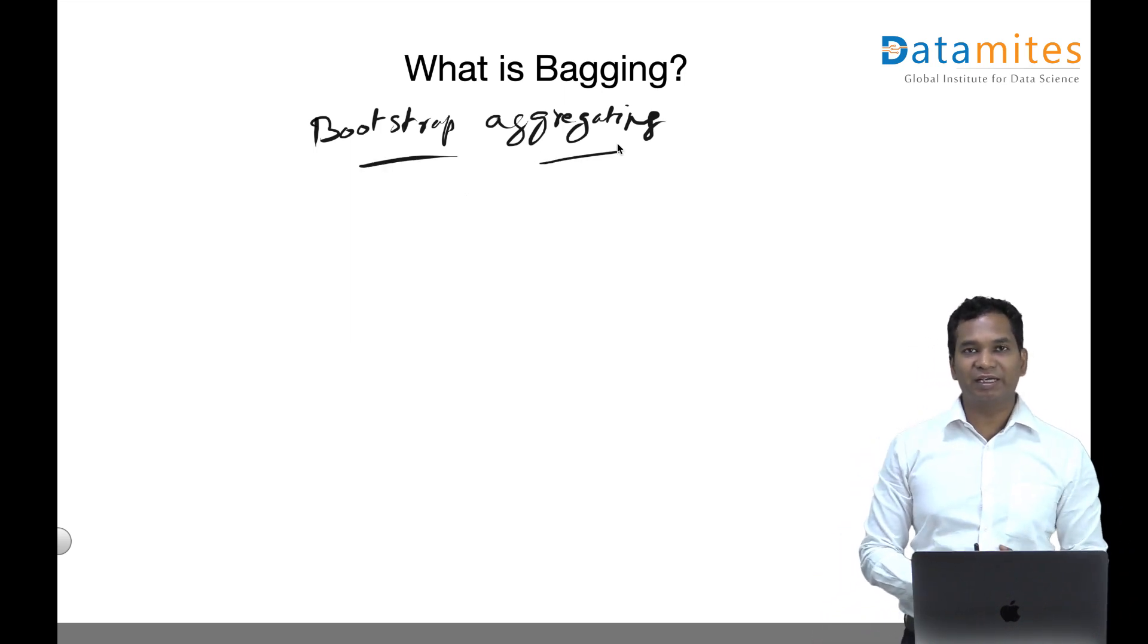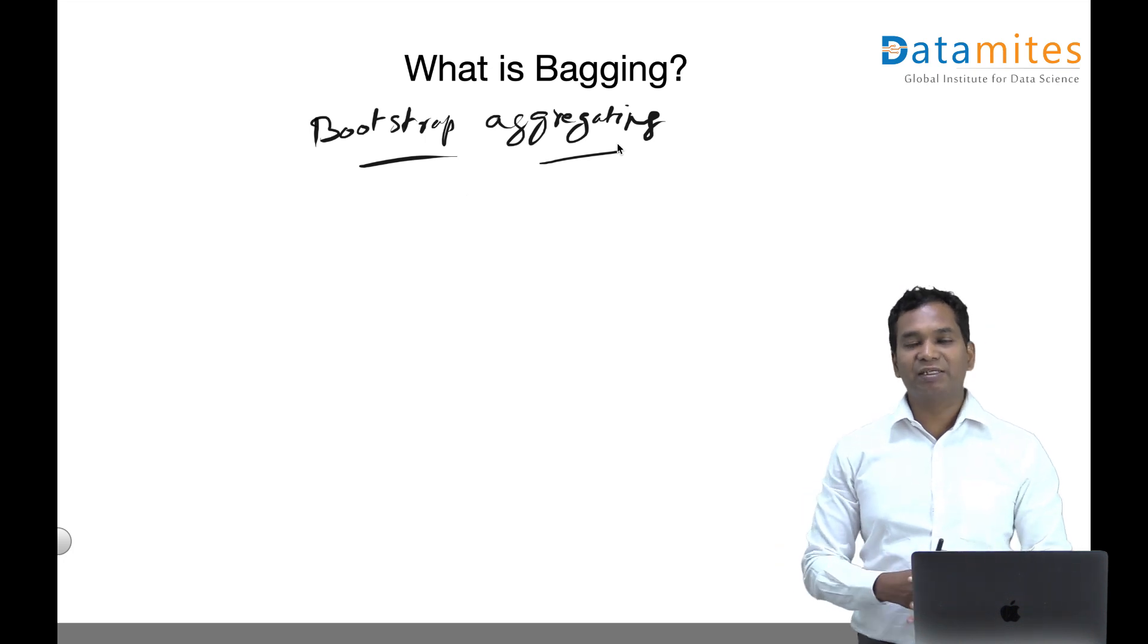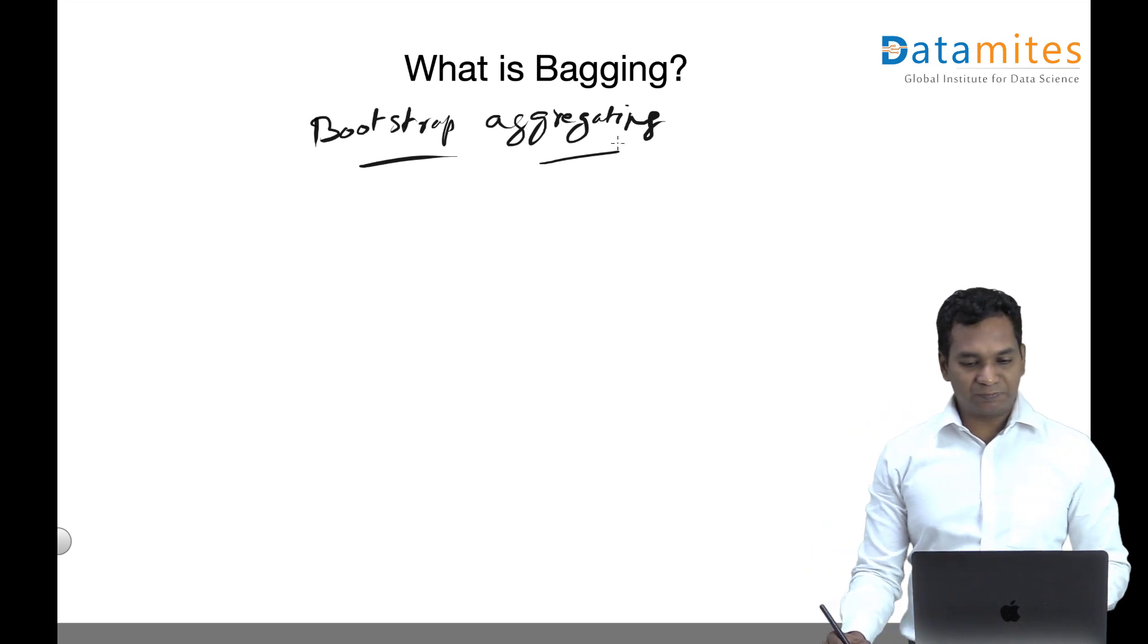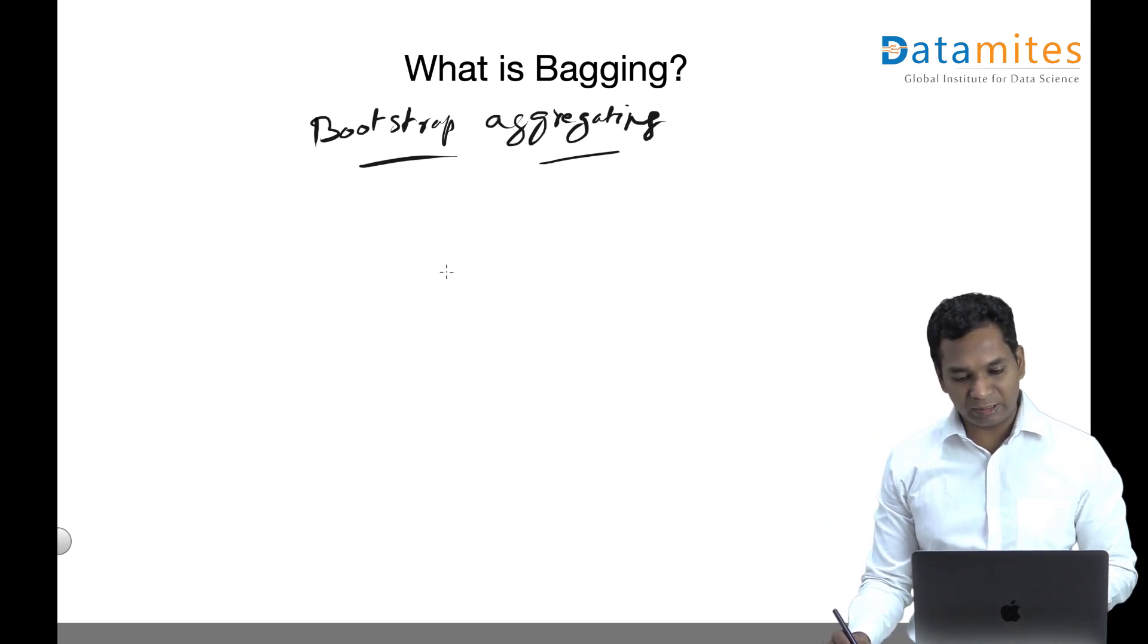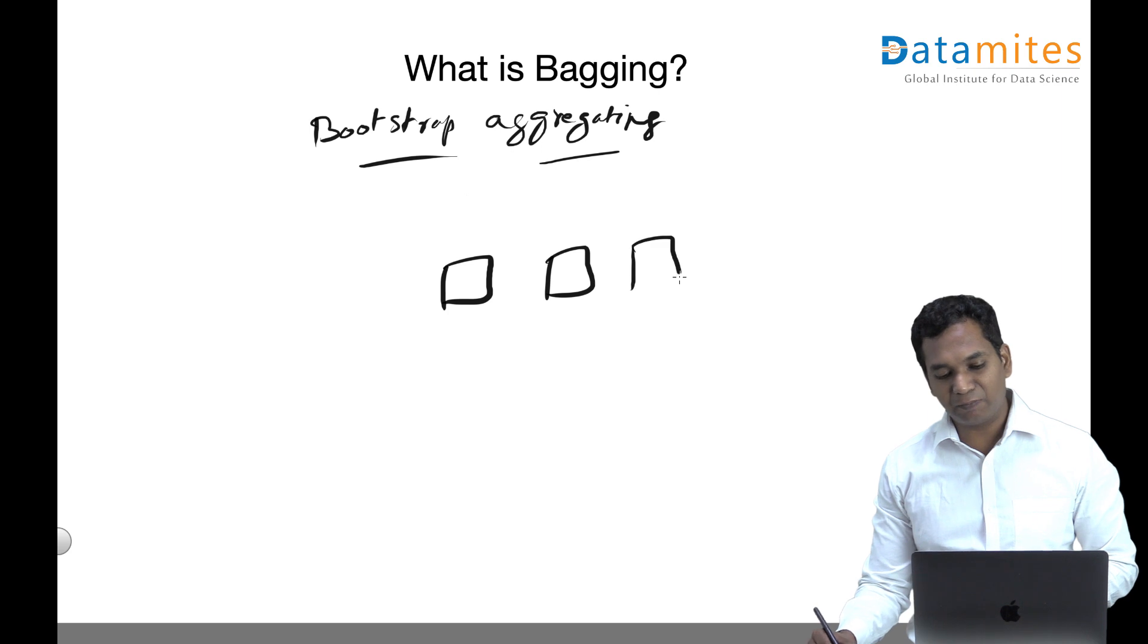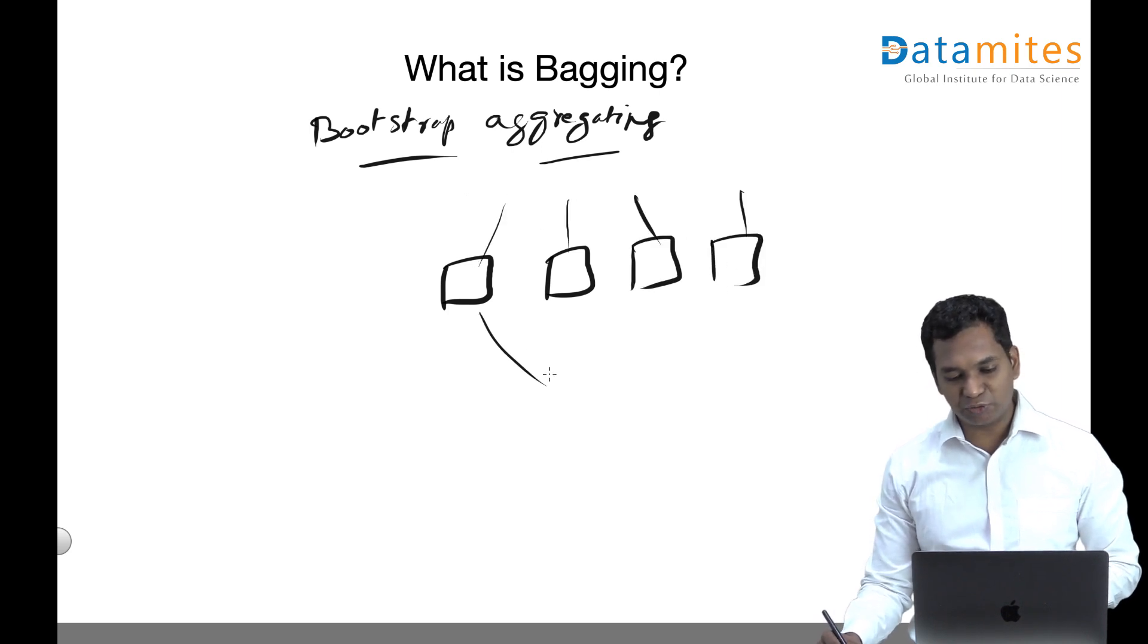Bagging is one of the ensemble techniques where you use several models in parallel to improve the model accuracy. Rather than using one single model, in bagging we actually build several models in parallel and try to combine them.